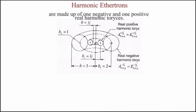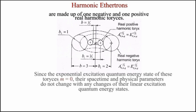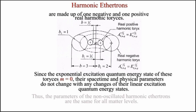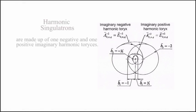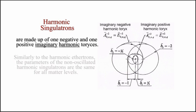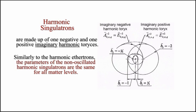Harmonic aetherotrons are made up of one negative and one positive real torese. Since the exponential excitation quantum energy state m of these toreses equals 0, their spacetime and physical parameters do not change with any changes of their linear excitation quantum energy states. Thus, the parameters of the non-oscillated harmonic aetherotrons are the same for all matter levels. Similarly, the parameters of the non-oscillated harmonic singulatrons are the same for all matter levels.